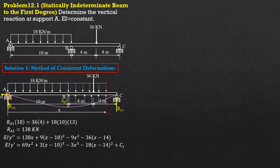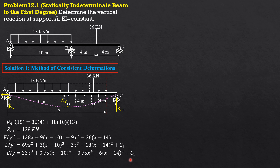There is slope at A, so that's why there is C₁. There is no deflection at A, so there is no C₂. Integrating again: EIy equals 23x³ plus 0.75(x − 10)⁴ minus 0.75x⁴ minus 6(x − 14)³ plus C₁·x. We can now evaluate C₁.